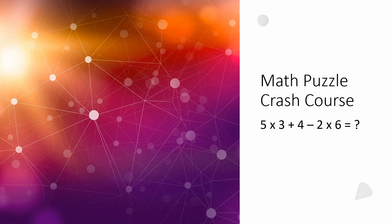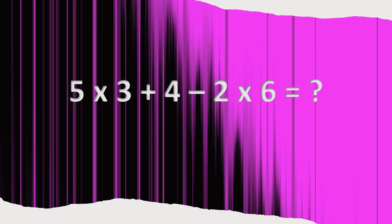Welcome back everyone to the math puzzle crash course. We have another order of operations problem — this one has multiplication, addition, and subtraction in it. The problem is: five times three plus four minus two times six.